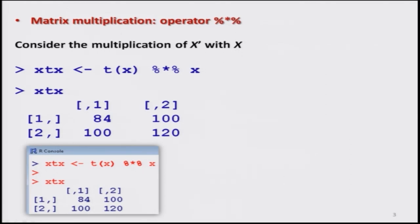First, let us consider how to do the multiplication of two matrices. The operator for matrix multiplication is the percentage-star-percentage sign — that is, a multiplication sign enclosed inside two percentage signs. This indicates matrix multiplication. If you do not use this percentage sign, then it means a simple scalar multiplication of the matrix.